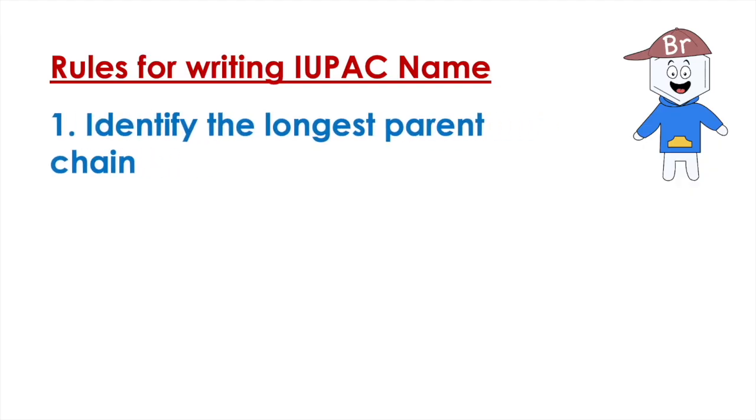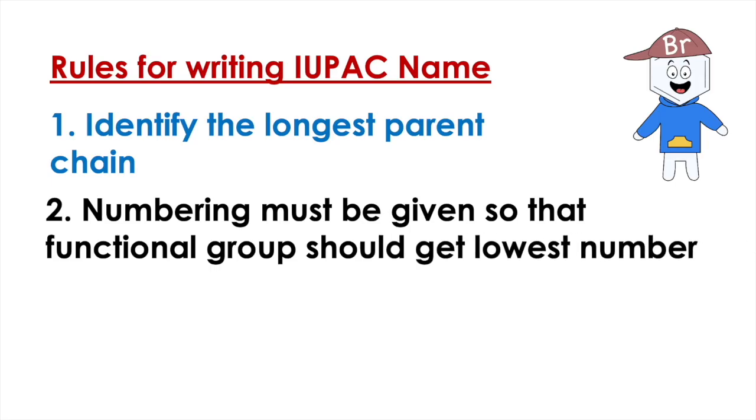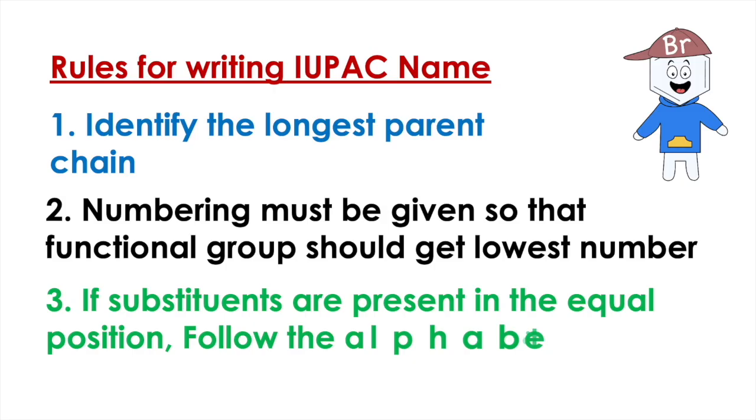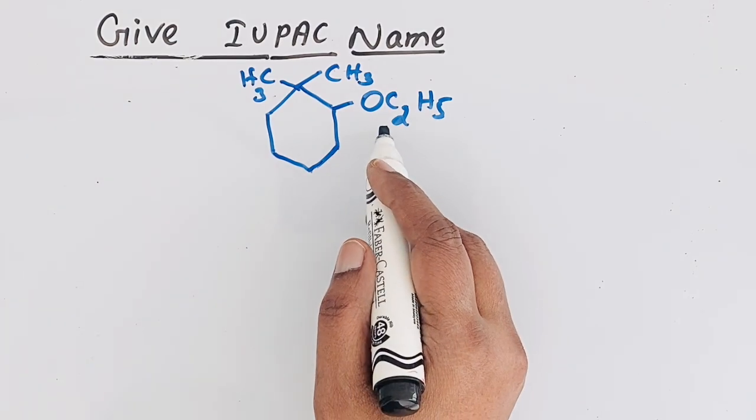According to the rules, we need to find the longest hydrocarbon chain. If there is a functional group, the functional group should get the lowest number. If the substituents are present, the substituents are named based on their alphabetical order.